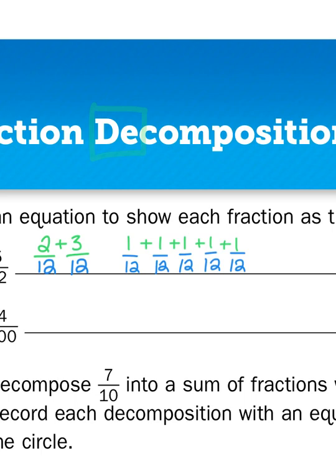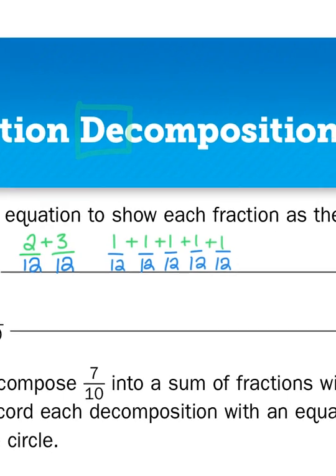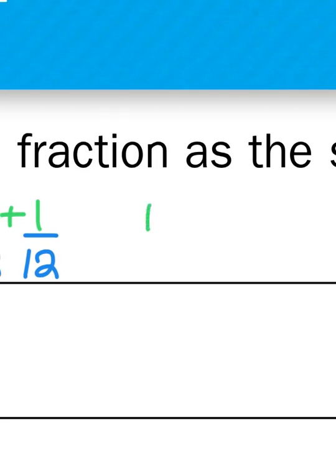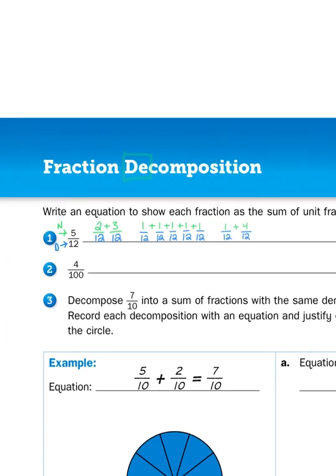There are lots of different ways you could compose an equation. You could flip around the 2 and the 3 — so 3 twelfths plus 2 twelfths. You could also use 1 twelfth plus 4 twelfths, because 1 plus 4 gives us 5, so 1 twelfth plus 4 twelfths gives us 5 twelfths. Any of these solutions would work.